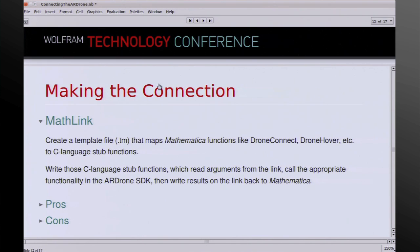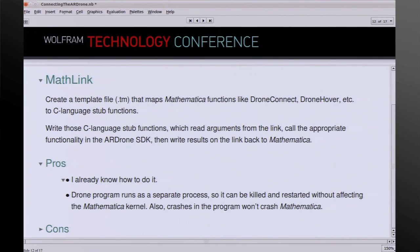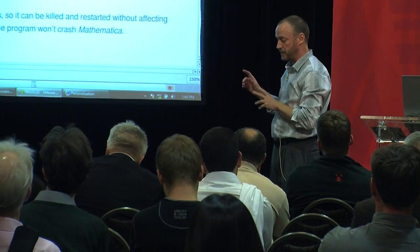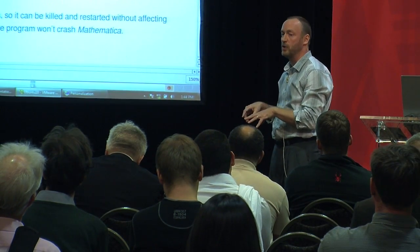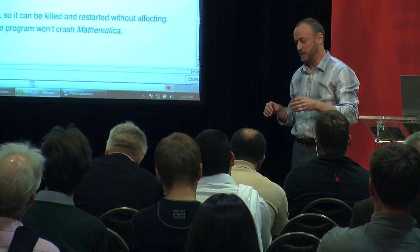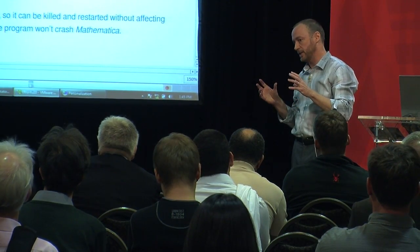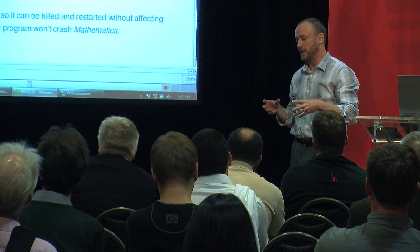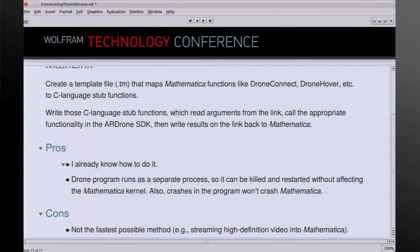Some pros of MathLink: one, I already know how to do it. Two, the drone program runs as a separate process, so it can be killed and restarted without affecting the Mathematica kernel — crashes in the program won't crash Mathematica. That turns out to be nice because of the way the drone SDK works; it's really designed to be used as an application, so within one session it doesn't work to connect, disconnect, and connect again. The cons: it's not the fastest possible method, and in particular we were thinking about streaming high-definition video into Mathematica, and there may be some issues with that.